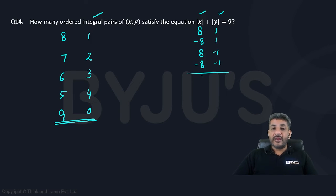Similarly, if I interchange 1 and 8, that means 1 and 8, or 1 and -8, or -1 and 8, or -1 and -8, still it would be correct.